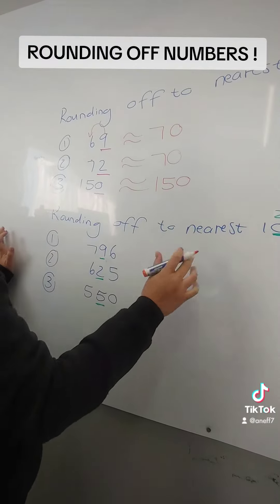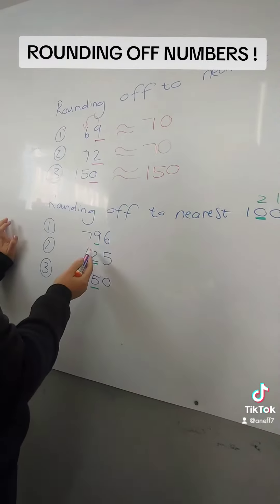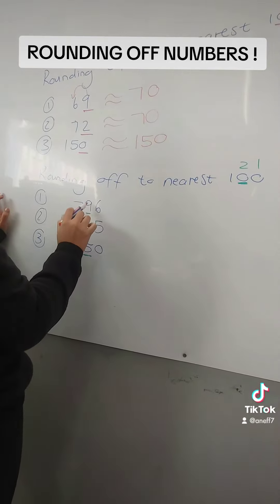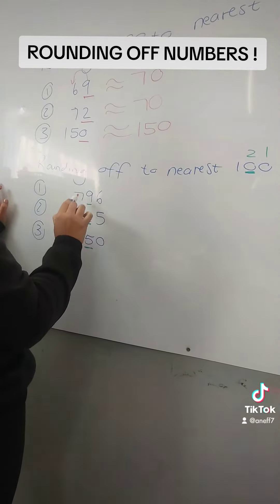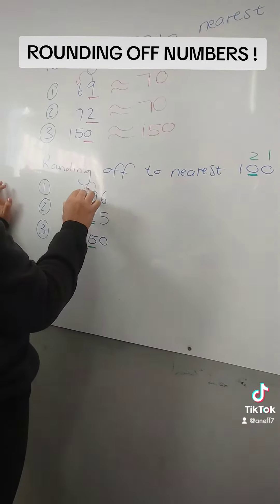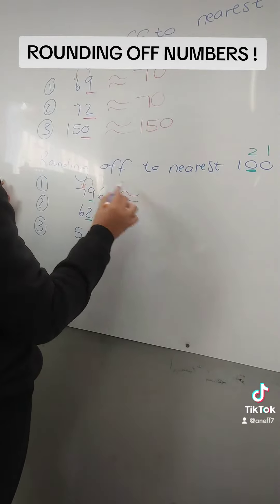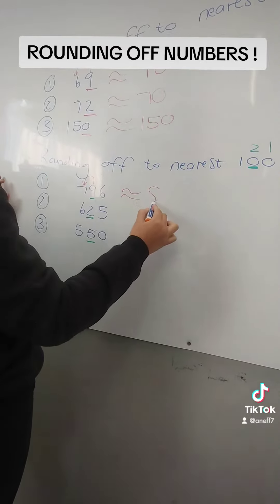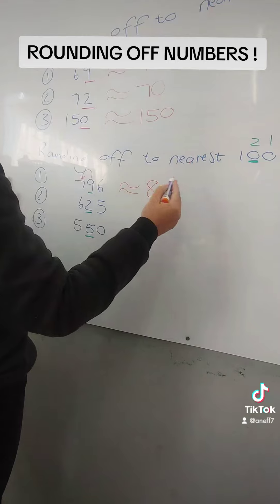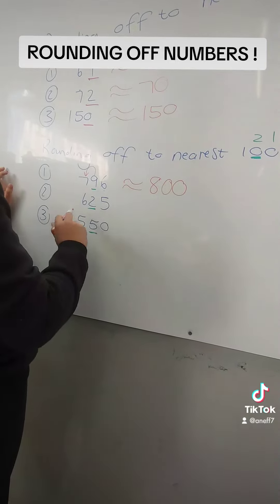Rounding off to the nearest hundred, we're going to look at the second last number. So we're going to look at this 9 here. This 9 is bigger than a 5, so it's going to have an impact on the 7. We're going to round it off — the 7 is going to change to an 8, and after that it's 0, 0. There are two digits after that.